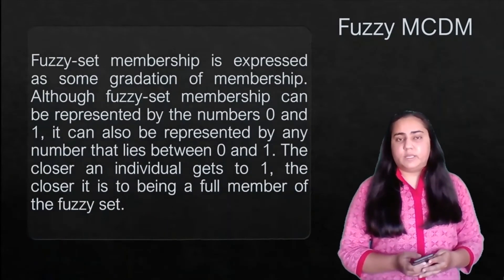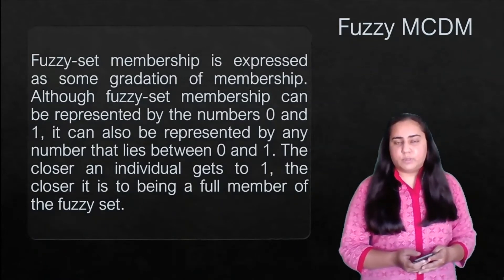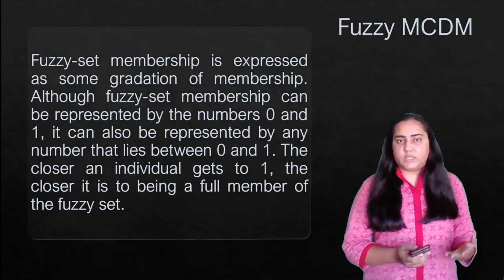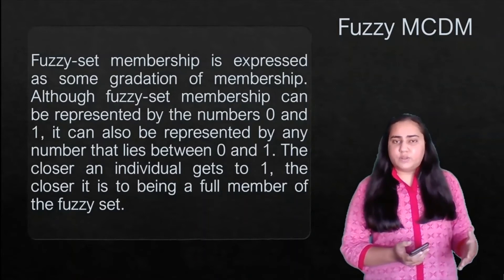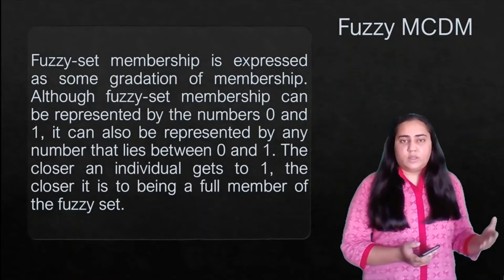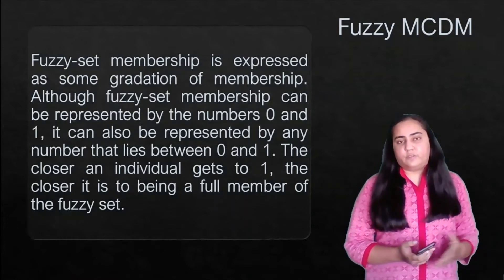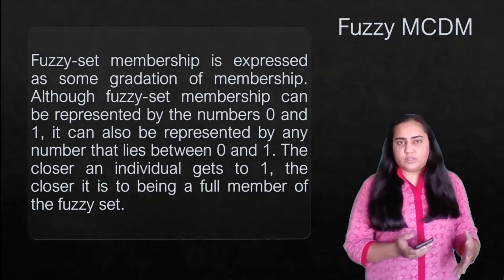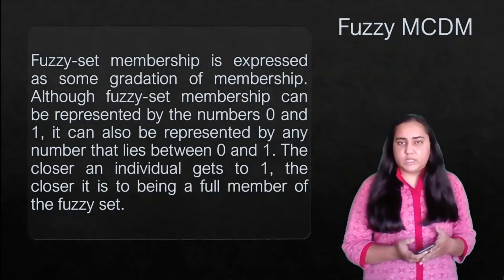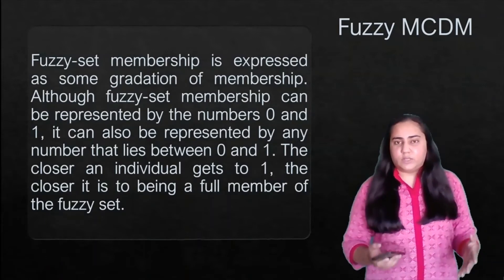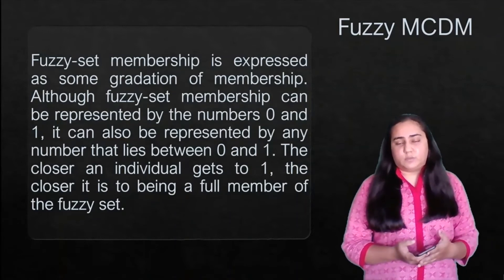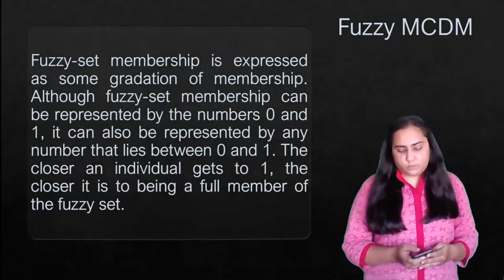Fuzzy set membership is expressed as some gradation of membership. Although it can be represented by zero and one, it can also be any number between zero and one. The closer an individual gets to one, the closer it is to being a full member of the fuzzy set. So it's not just accepted or not accepted — it could be 70% accepted. That is what fuzzy MCDM means.